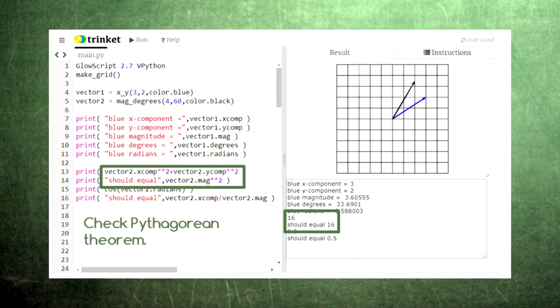We can use these attributes to check the relationships between the components, the magnitude, and the angle. For example, we can apply the Pythagorean theorem to vector2's x component and y component and check that we do, in fact, get its magnitude squared.